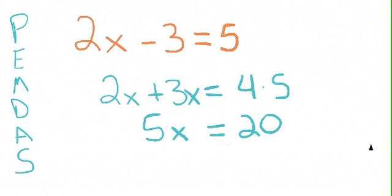We end up with 5x is equal to 20 once both sides are simplified.